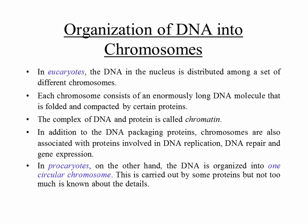In bacteria, on the other hand, the DNA is organized into one circular chromosome. They don't have many chromosomes like we have linear chromosomes — all the DNA is organized into one circular chromosome.